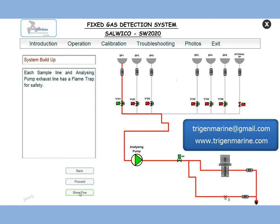As of now, let us say sample point number one is open. The gas will pass from here, pass through the sample pump, and then be passed through the detector. With a timer, it will keep shifting to the next sample points.